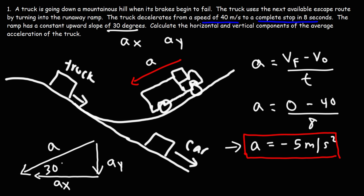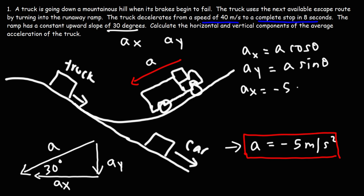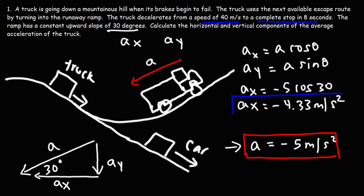We have the angle of 30 degrees, so we can calculate the components using SOH-CAH-TOA. The x component is the acceleration times cosine theta, and the y component is a times sine theta. Typing in negative 5 times cosine of 30 gives us the x component of the vector, which is negative 4.33. If you don't get the negative sign you need to add it, because the x component of the acceleration is in the negative x direction.